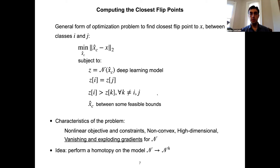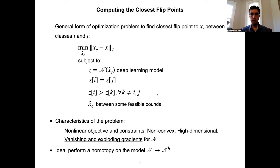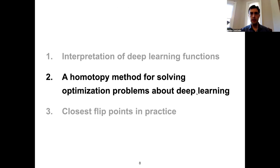The most important challenge is the issue of vanishing and exploding gradients in the network. This is a common issue when dealing with neural networks, having to do with the gradient of the output with respect to the input. When we compute this gradient using the chain rule, in the matrix multiplications smaller values tend to vanish and larger values tend to explode, giving us a Jacobian matrix that is not informative. The idea here is to use a homotopy method to solve this optimization problem.